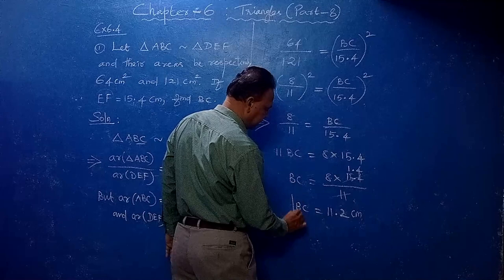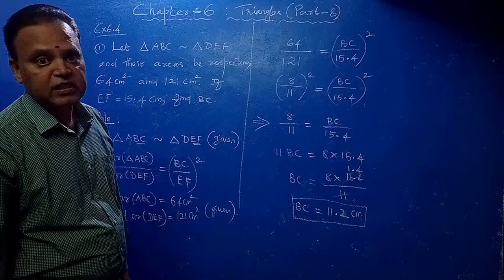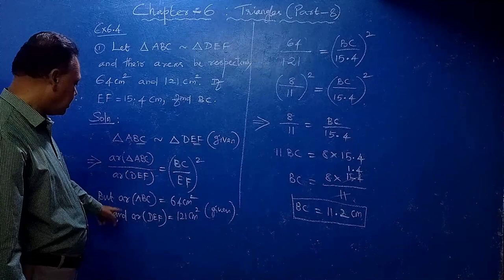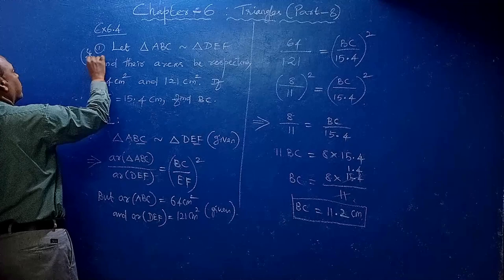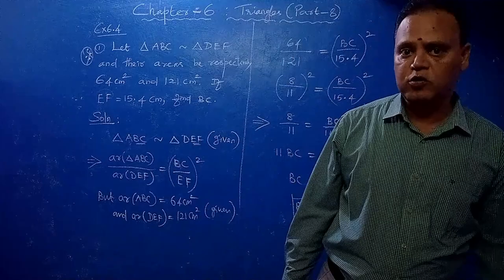BC is 11.2 cm. By using the result of the ratio of areas of two similar triangles, we can easily find BC. This is a very very important problem — it is a two-mark question.